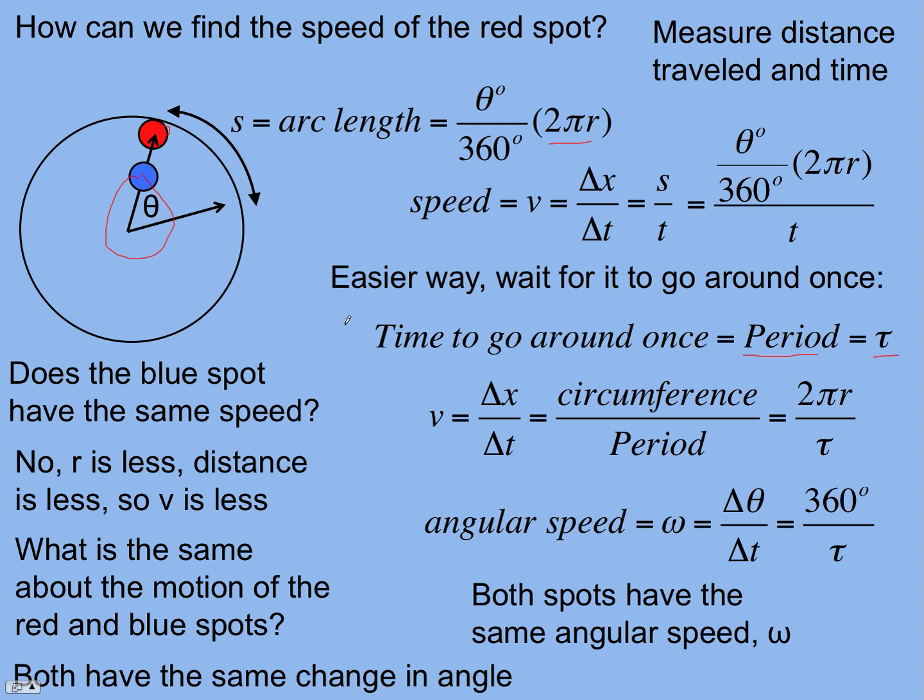Let's take a look at this further. Can we convert from angular speed to linear speed? We can, and it's easier if we use radians instead of degrees. Angular speed, omega, is change in angle over change in time, 2π over the period. The change in angle now, instead of 360 degrees, it's 2π radians. You should know there are 2π radians in a complete cycle.